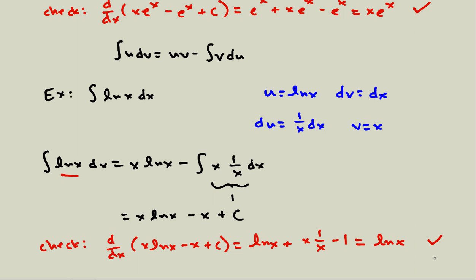Two observations from these examples: integration by parts is useful when you know how to differentiate something in your integral but not integrate it, and also when taking the derivative makes the expression simpler. Those will tend to be the most common cases. In the next video, I'll show more examples and give advice about how to use integration by parts.